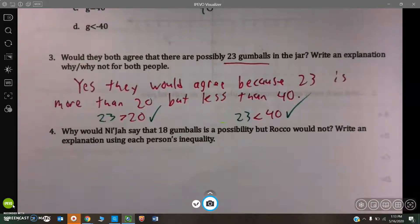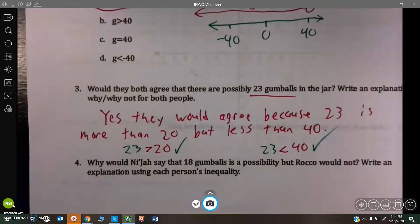Why would Niza say that 18 gumballs is a possibility, but Rocco would not? The reason being, because she said less than 40, Rocco said greater than 20. So, 18 is less than 40, but not greater than 20.